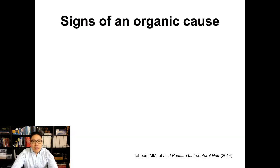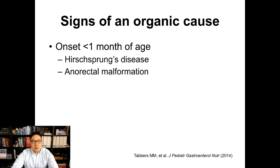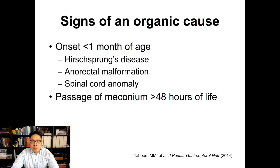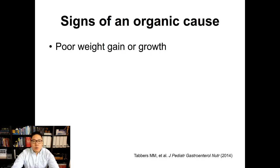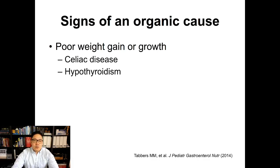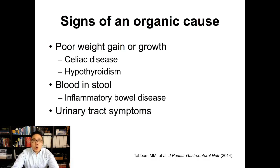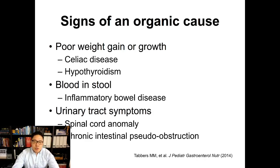What would make us think about an organic cause rather than functional constipation? Onset less than one month makes us think about Hirschsprung's, anorectal malformation, or a spinal cord issue. Delayed passage of meconium, especially greater than 48 hours after birth, raises concern for Hirschsprung's — though even with normal meconium passage, Hirschsprung's is still possible. Poor weight or growth raises concern for celiac disease or thyroid issues. Blood in the stool raises concern for inflammatory bowel disease. Urinary tract symptoms may suggest spinal cord issues due to shared innervation, and can also be seen with chronic intestinal pseudo-obstruction.